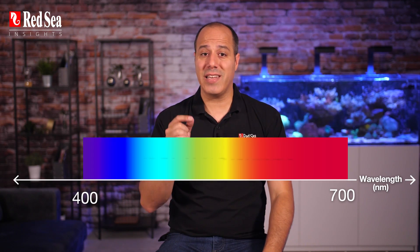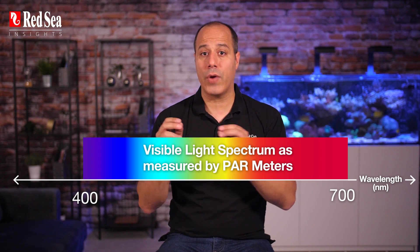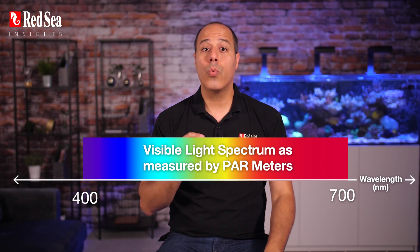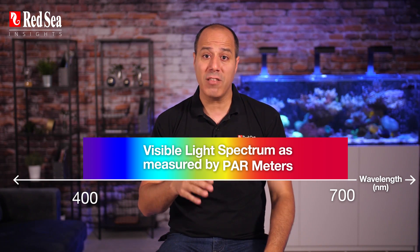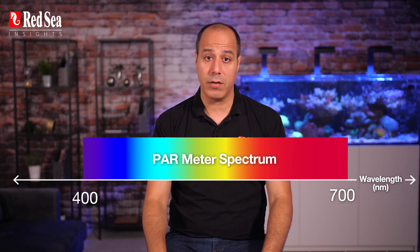We all use power meters to measure light in our reef aquarium, but is it possible that it's obscuring part of our view? The power measurement was developed for the terrestrial photobiology research of plants and crops. It represents the intensity of photosynthetic active radiation within the visible light spectrum that spans between 400 to 700 nanometers.